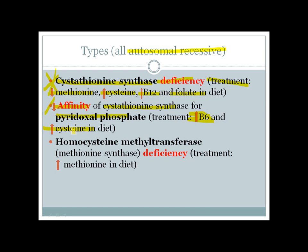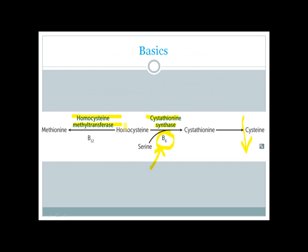A less common cause of homocystinuria is deficiency of homocysteine methyltransferase. If homocysteine methyltransferase is deficient, methionine levels will drop. Treatment in these patients requires supplementing with methionine.